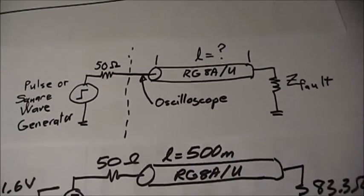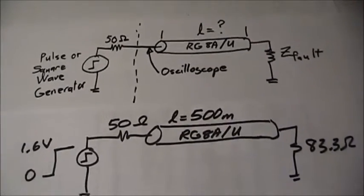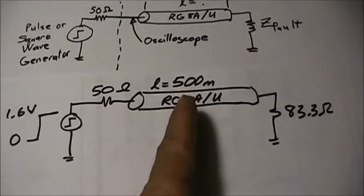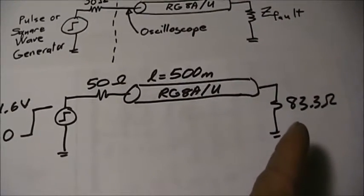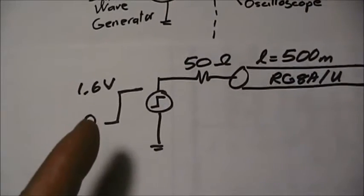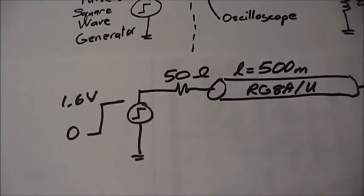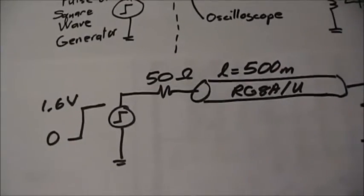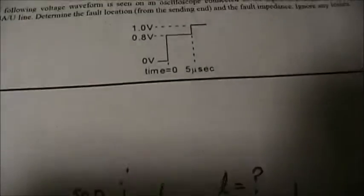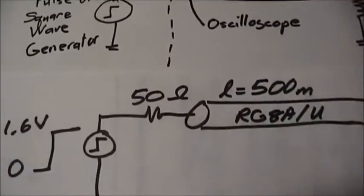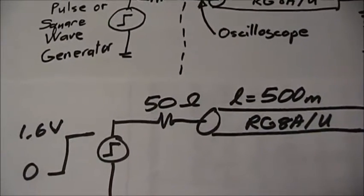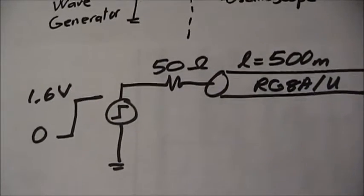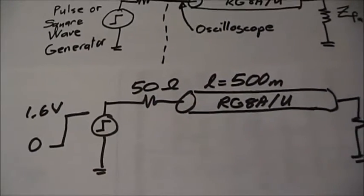So, now we are ready to go back and finish our problem statement so we can do the simulation. From the starting problem, we have added these details. 500 meters for the cable length, which was based upon the time delay. 83.3 ohms based upon the reflection coefficient. And back here at the source, 1.6 volt pulse. We calculated that by the 0.8 volts we see at the input to the scope, which is halfway in terms of an impedance because of the 50 ohm, 50 ohm split of the cable and the source. Now we are ready to do the simulation in PSPICE.